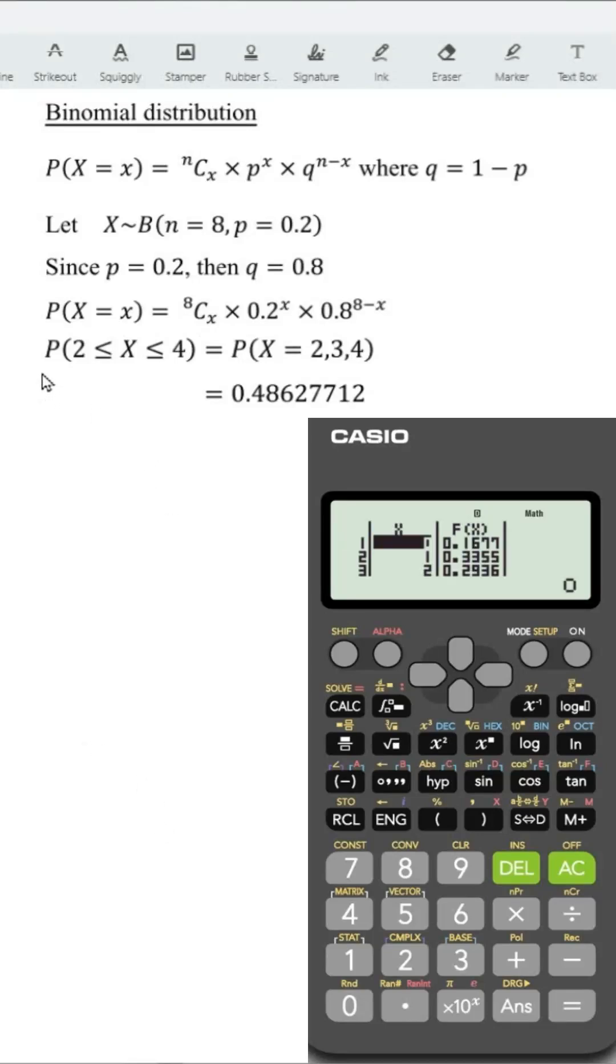To solve binomial distribution, if you are asked to determine the probability for a given range, firstly, form the general function.